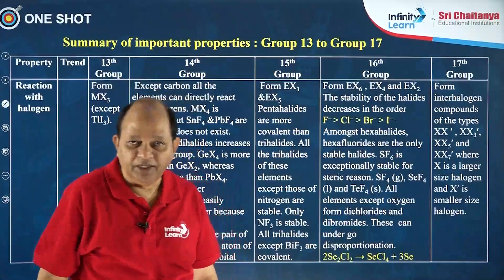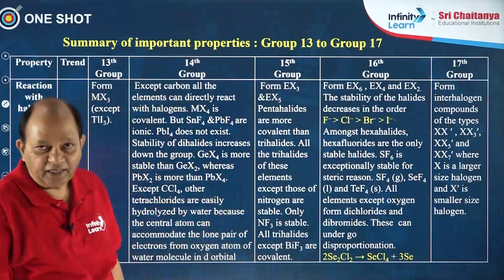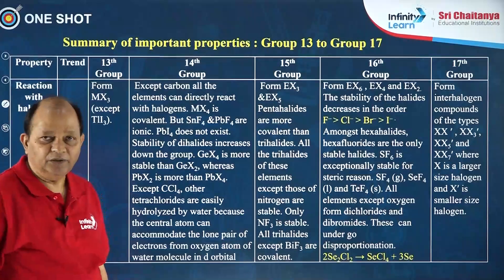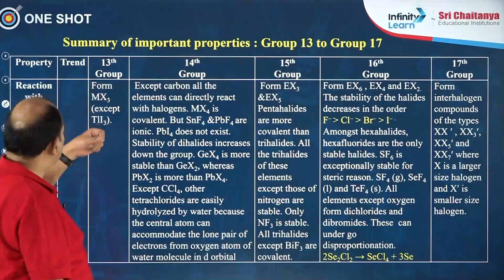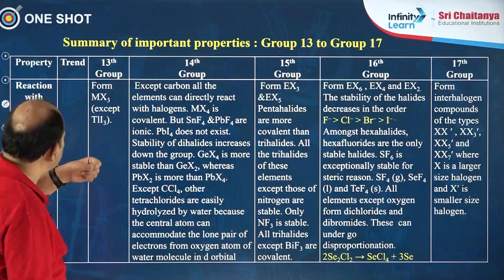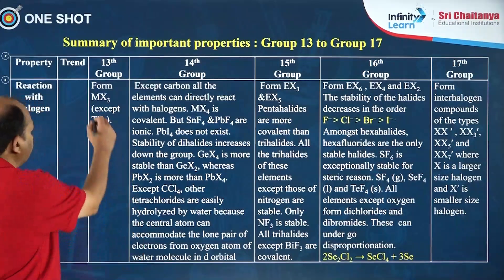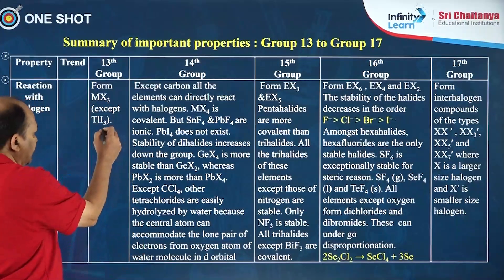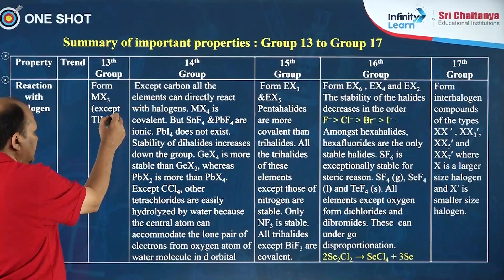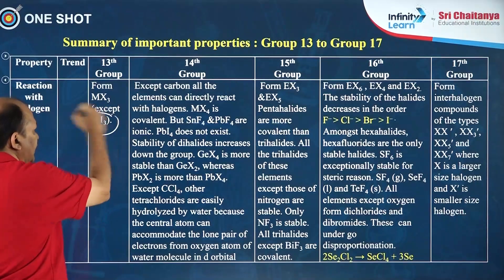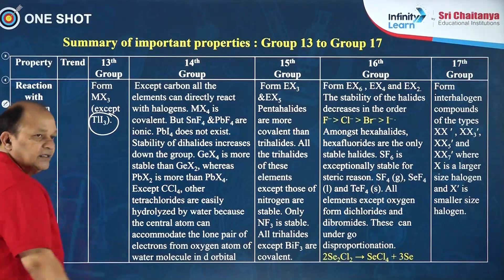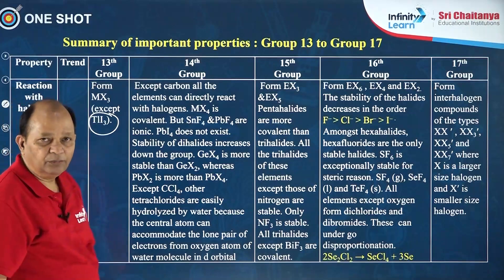The next important property is reaction with halogens. Concerning group 13 elements, they form halides of the type MX3, but thallium triiodide is not formed.